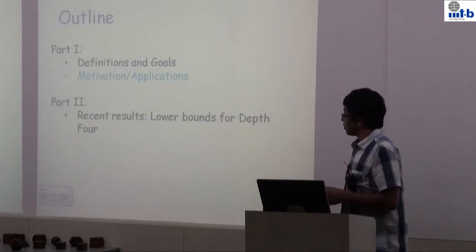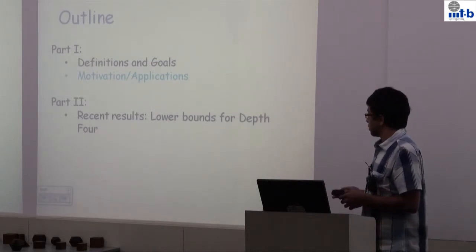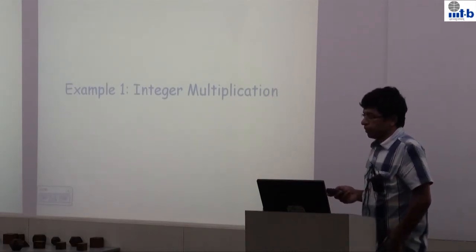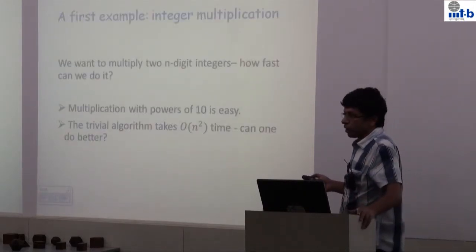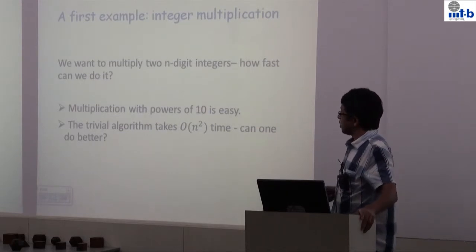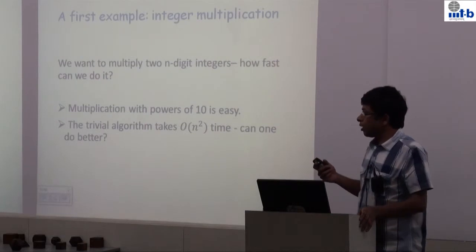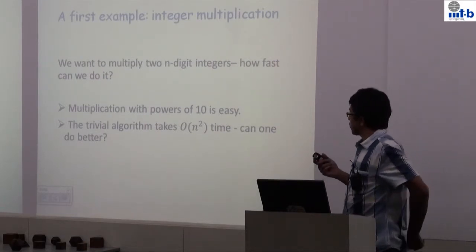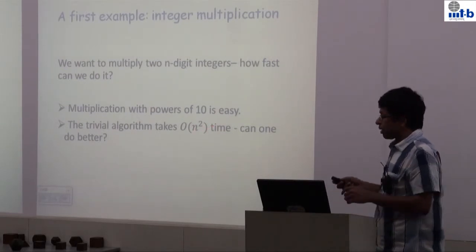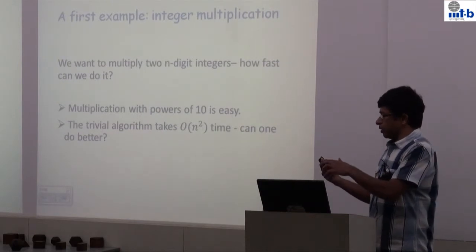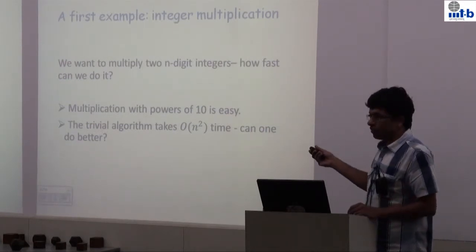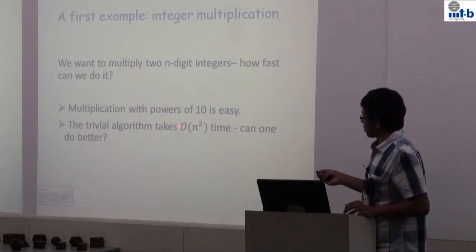Let's start with a very basic example of integer multiplication — multiplying two n-bit integers, think of n as maybe 10,000. We know one way from school: you write down two n-digit numbers, take each digit of the second number, multiply it with the first, shift appropriately, and add. If you think about it, this takes roughly n-squared amount of time.